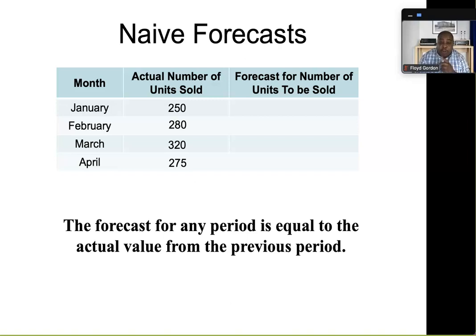What we're seeing here is that we have actual number of units sold for January to April. Now, if we're doing a naive forecast for January, we really wouldn't be able to provide a forecast because we would need to have the actual number of units sold for the previous month, December, which we do not have. So since we do not have that, we can basically skip January.